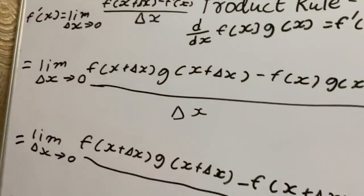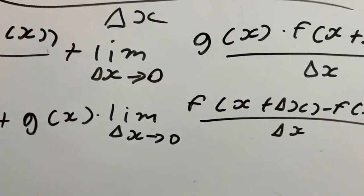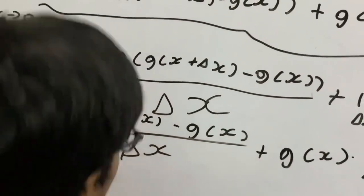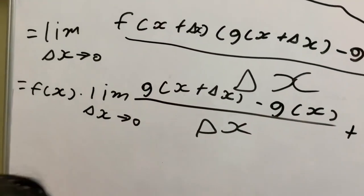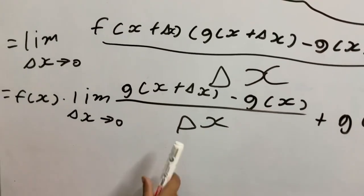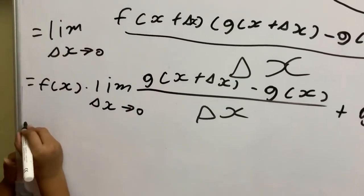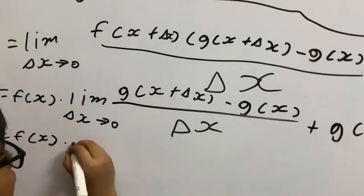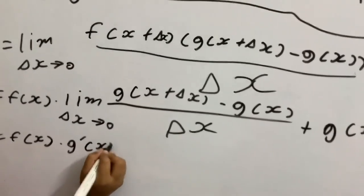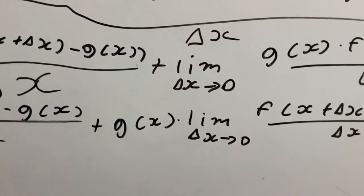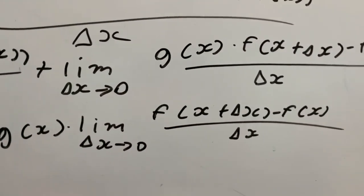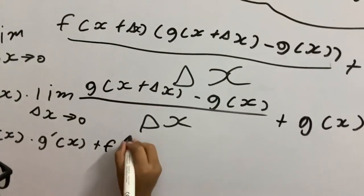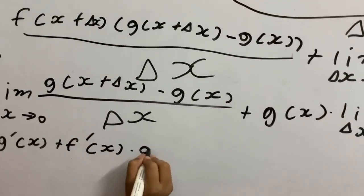These two limit formulas match the definition of the derivative — this is the derivative of g(x), and the other is the derivative of f(x). So we can write this as f(x) times the derivative of g(x) plus g(x) times the derivative of f(x), which completes the proof of the product rule.